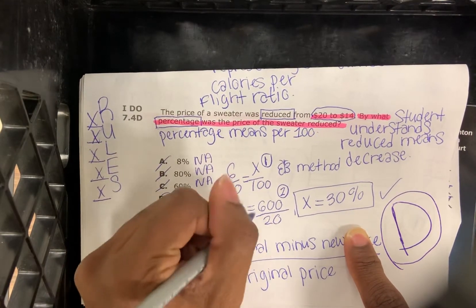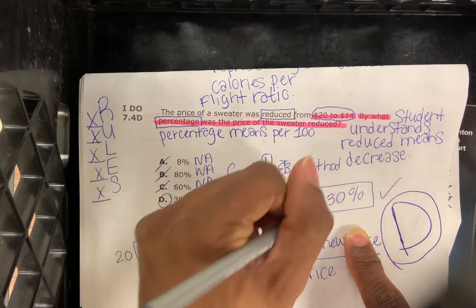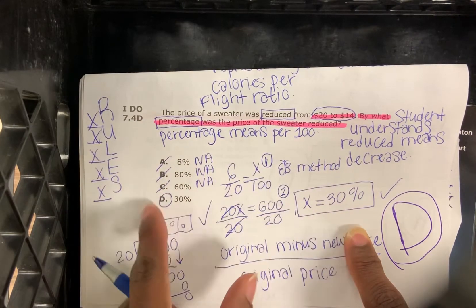What's going to leave us with X equals 600 divided by 20. X is going to be equal to 30%. The answer is D.